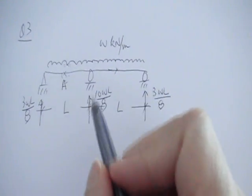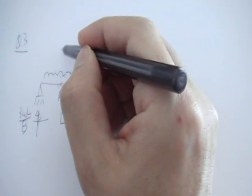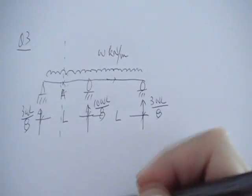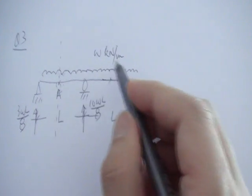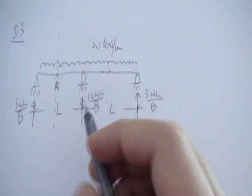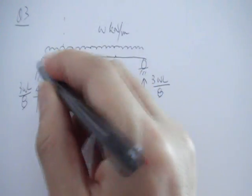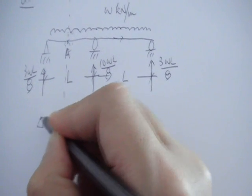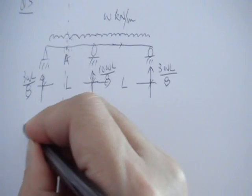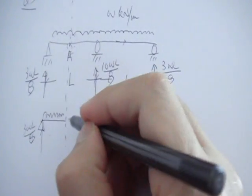Alright, so you don't need to carry out the first step because all the reactions are given. So just chop this thing here, and then you take, of course, you take the left part. And if you want to take the right part, it's still okay, but that will take a lot more calculation to do. So let's take the left part, so I draw it here, and that's my support there, that's 3WL over 8. And don't forget your UDL, and that's my cutting point A.